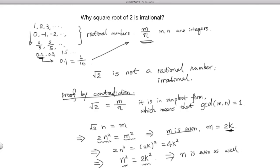Now we have m is even and n is even, but then that means GCD of m, n is not 1. They have a common factor of 2. And this is inconsistent or contradicts with our assumption that GCD of m, n equals 1.